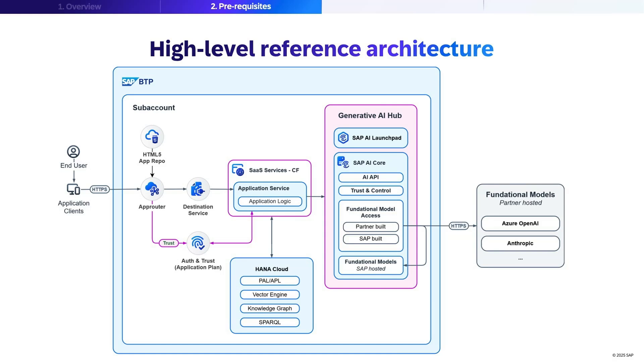While offering robust guardrails such as access control, auditability, and prompt grounding. This architecture means enterprise context always flows from SAP HANA Cloud to your generative AI models, making every response explainable and grounded in trusted business data.